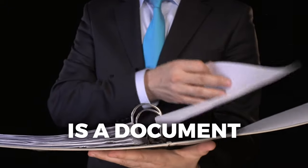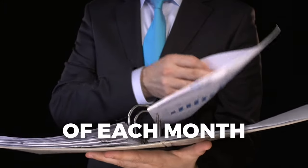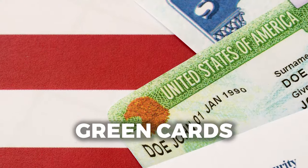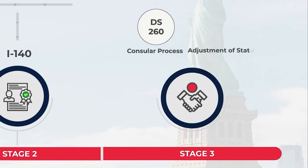Before explaining how the visa bulletin works and how to read it, let's understand what it means. The visa bulletin is a document that the US Department of State issues on a monthly basis, approximately on the 15th of each month, to inform about the availability of visas for those who have green card applications pending. For those doing the EB-3 skilled visa, this applies in the third stage of the process. For those in the US doing adjustment of status, you will need to be aware of this document in the second stage — the I-140.